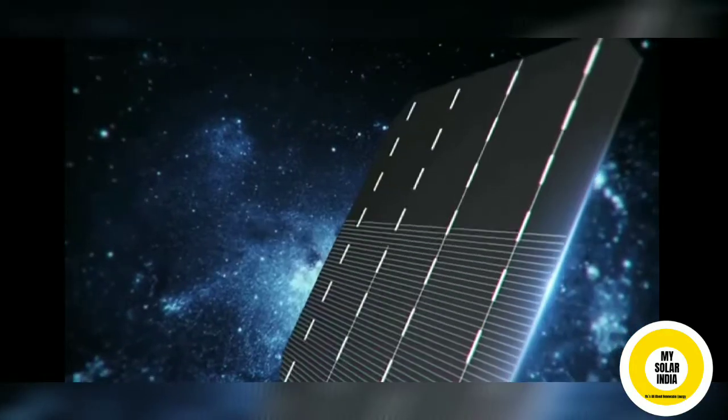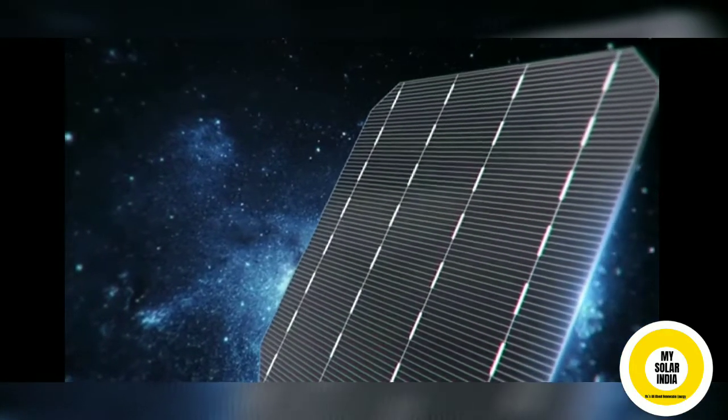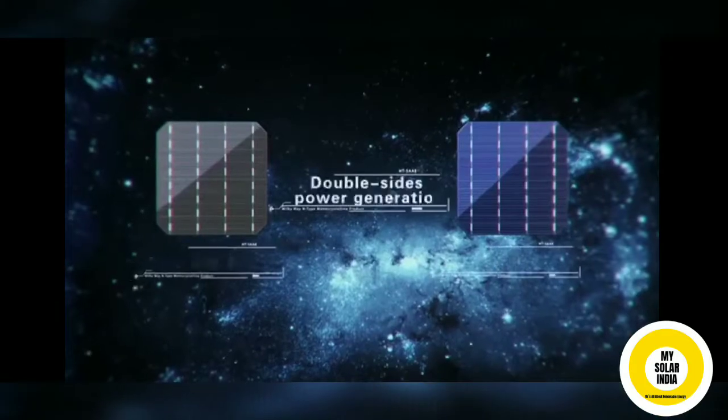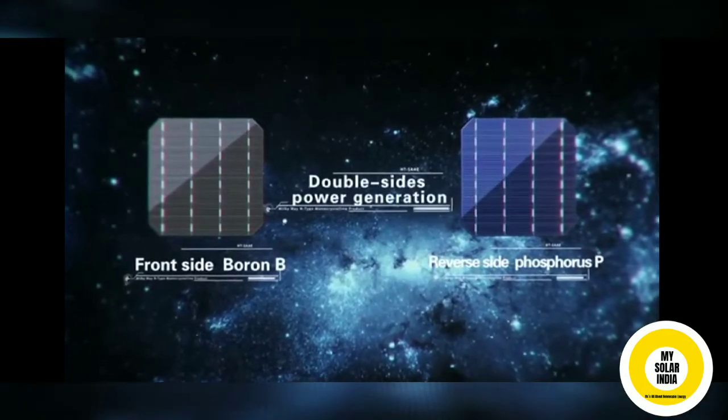Bifacial solar panels soak in light that comes from the front and rear side, thus enabling the usage of diffused light as well as light reflected by a surface.